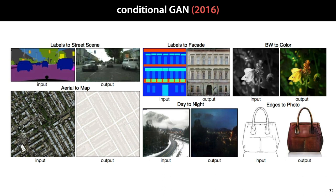A conditional GAN lets us train generator networks that can do this. All we need is a dataset of paired-up images, where we have an input and an example of what kind of output should result. In most of these examples, the job is to reverse an operation that is easy to do the other way around. For instance, with a simple edge detection algorithm, we can easily turn a photograph of a handbag into a line drawing of that handbag, but reversing the operation is difficult. And this is why the data for these kinds of tasks is easy to generate.